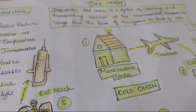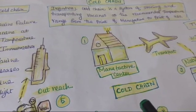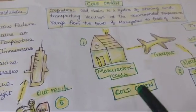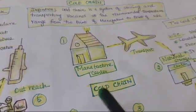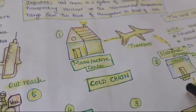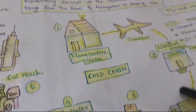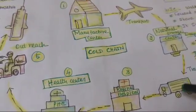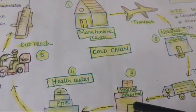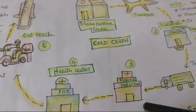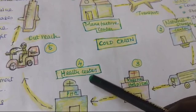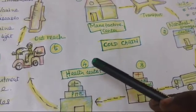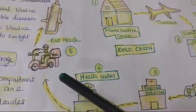The vaccine is manufactured in the manufacturing center. From the manufacturing center, whether inside the country or outside the country, it is taken by transport to the national storage center. From the national storage center, it goes to the regional hospitals, then from regional hospitals to the health centers. Health centers may be primary health care centers, and from there it goes to sub-centers and then to the outreach area.